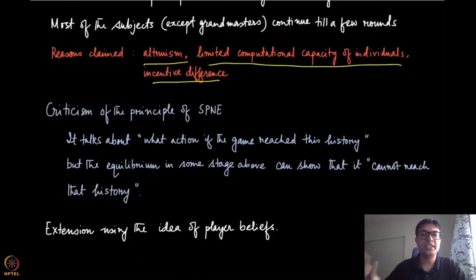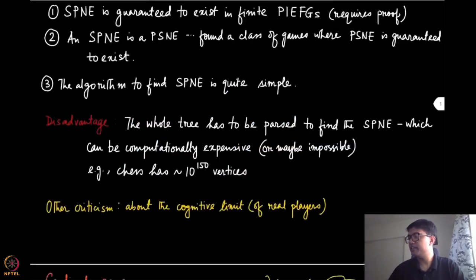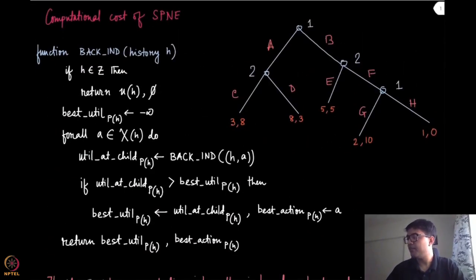So that was the qualitative criticism about the idea of SPNE and that it does not work so well in practice. But there are certain other criticism from the theoretical aspect of SPNE as well. So subgame perfect Nash equilibrium is actually talking about what action will you play when the game reaches that history. So for instance, in our previous example we have seen what action should player one will play if it reaches this particular node.